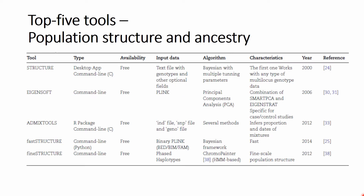The first category they analyze is population structure and ancestry. The tables always have the same header information: the tool name, the type, availability — which is always free, which is excellent — a description of input data and algorithm characteristics, year of publication, and reference. These full references can be found in the paper itself. I will not go through each and every detail for each software tool, so you can either pause the video to review a table or check out the source publication.